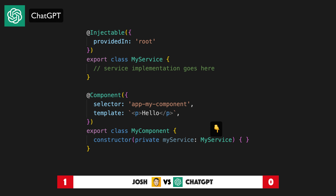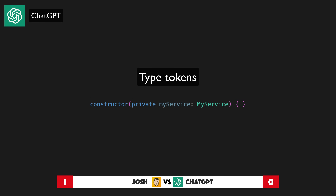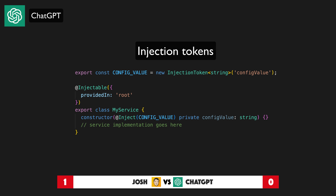In Angular, a token is a value used to identify a dependency that can be injected into a component or service. When a component or service is created, Angular's DI system looks for a corresponding token in the registry and injects the corresponding dependency. There are two types of tokens: type tokens, which identify dependencies by their type, and injection tokens, which are custom tokens you can create to identify dependencies. Injection tokens are useful when you want to use a value other than a type as the token — for example, a configuration value that you want to inject into a service.